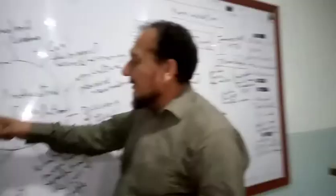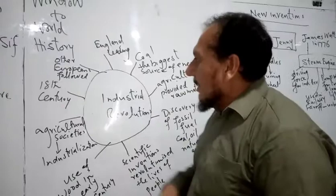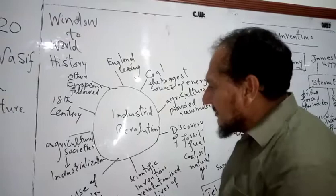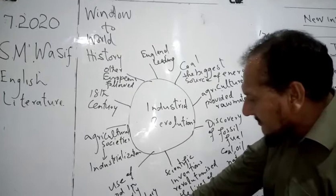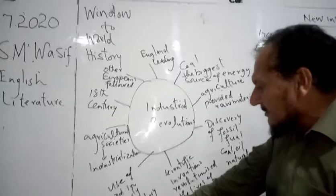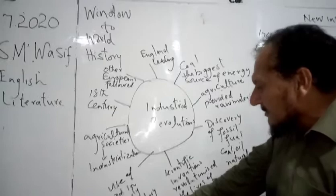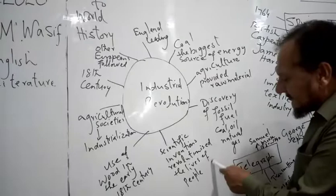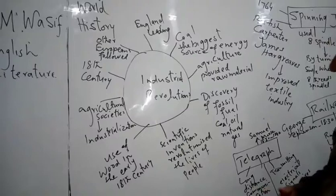Industrial Revolution took place in the 18th century, and in this time agricultural societies went towards industrialization. There was the use of wood in the early 18th century. People were using wood for all their necessities like making fire, for buildings, and for all other necessities. But scientific inventions revolutionized the lives of the people. They went out of their traditional life and miserable condition, and now their lifestyle became a standard one.